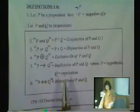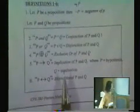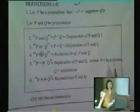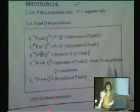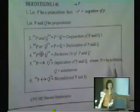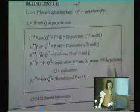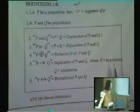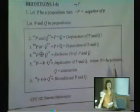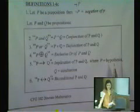The next one is implication. P implies Q. P would be the hypothesis. If P is true, then Q must be true. So what would make this statement be false? When Q is false and P is true, otherwise this statement would be true, right?